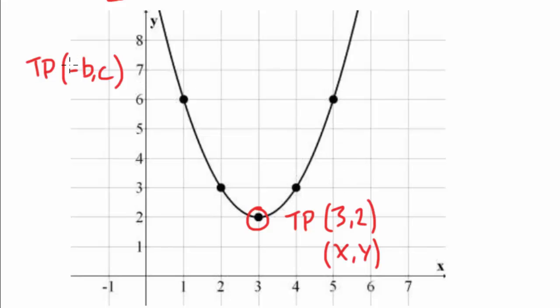This is the minus b portion of this. And we've got the c coordinate, it's 2. So what we've got is b equals minus 3 and c equals 2.